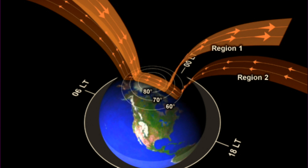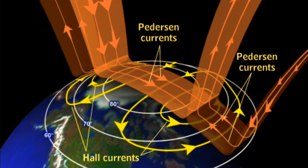Hopefully we all recognize the Birkeland currents connecting Earth to the Sun, arcing in and out at two different latitudes, approximately 75 and 60 degrees. The lateral currents connecting the Birkeland currents up into space are what we call Pedersen currents, which are partially driven by the Hall effect currents below them.